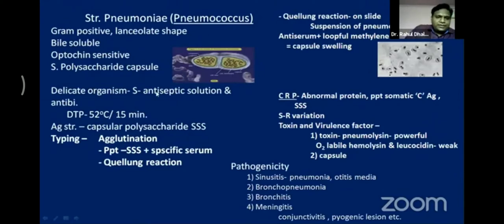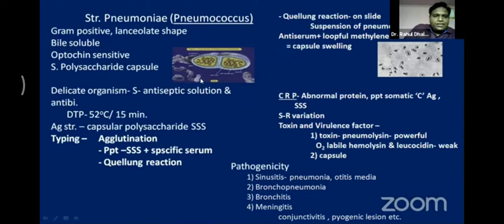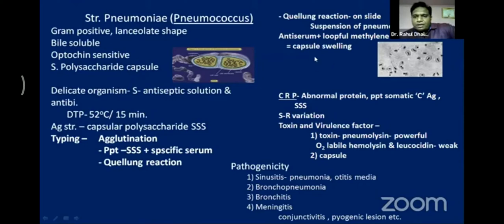Streptococcus pneumoniae has a polysaccharide capsule. It is delicate and sensitive to antiseptic solutions and antibiotics. The capsular polysaccharide is antigenic. To demonstrate pneumococci, we perform the Quellung reaction: taking a suspension of pneumococci with a drop of antiserum and a loopful of methylene blue, you observe the capsule swelling. This swelling reaction is known as the Quellung reaction, positive for pneumococci.